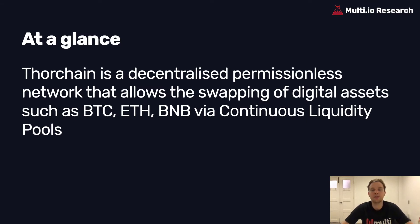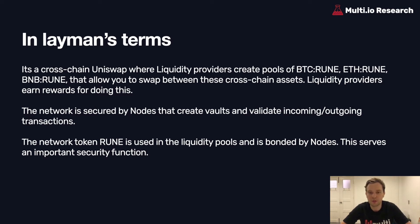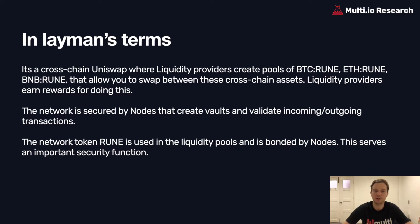So at a glance, ThorChain is a decentralized permissionless network that allows the swapping of digital assets such as BTC, ETH, BNB and so on by continuous liquidity pools. Basically, it's a cross-chain Uniswap with its own native token where liquidity providers create pools of BTC/RUNE, ETH/RUNE, BNB/RUNE that allow you to swap between these cross-chain assets. They also earn rewards for doing this. The network is secured by anonymous nodes that create vaults and validate incoming and outgoing transactions. The network token RUNE is used in the liquidity pools and is bonded by the nodes, which also serves an important security function.